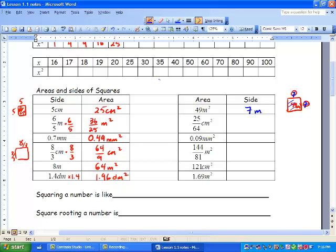So what two numbers multiply to 25 that are the same? Well, 5. And what two numbers multiply to 64? 8. So it's like saying 5 times 5 is 25. 8 times 8 is 64. So our side is 5 over 8 centimeters. 0.09 millimeters squared. So if that's our area, what number multiplied by itself equals 0.09? 0.3 millimeters.